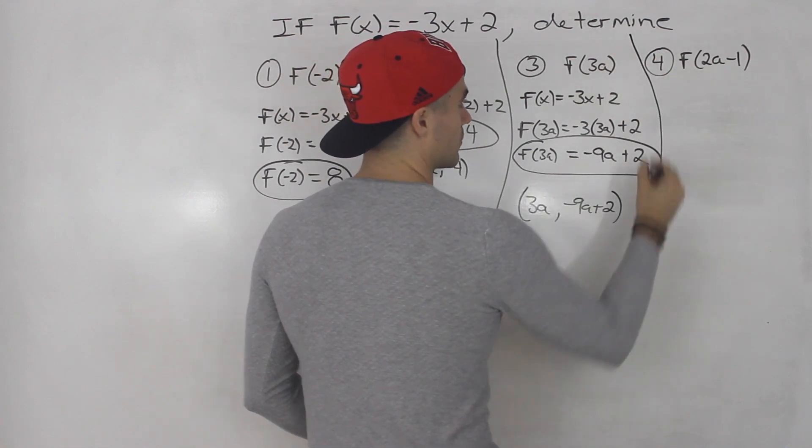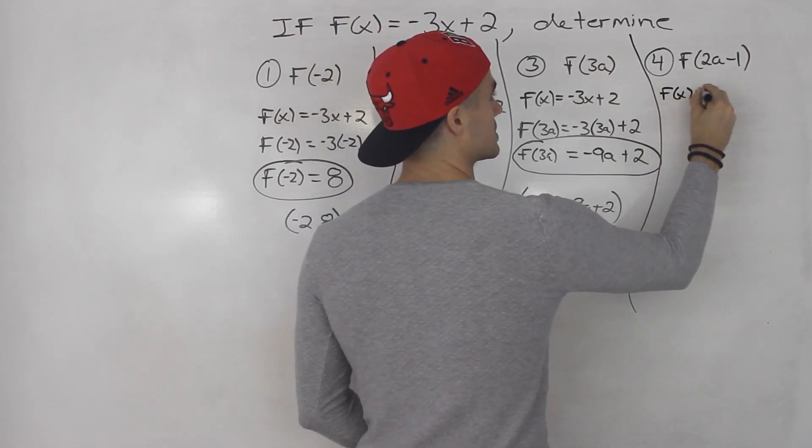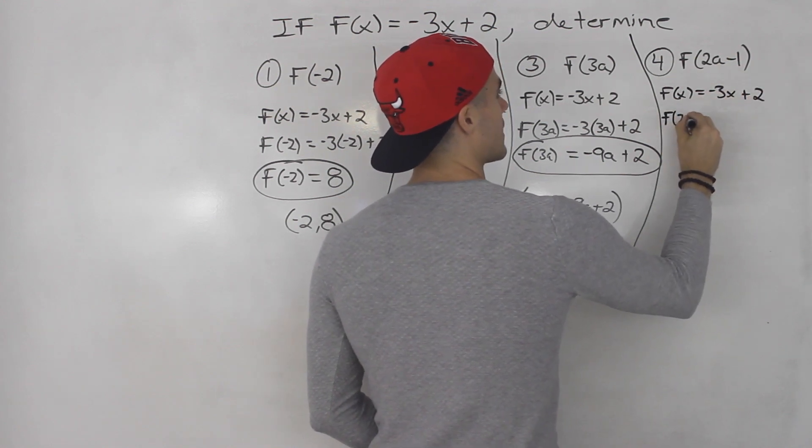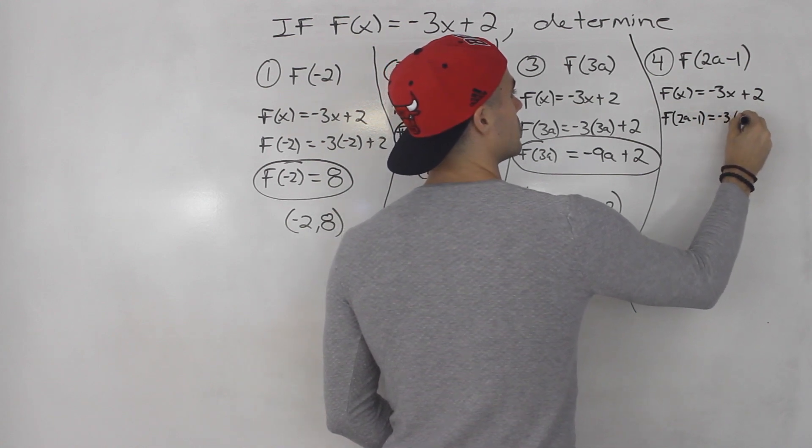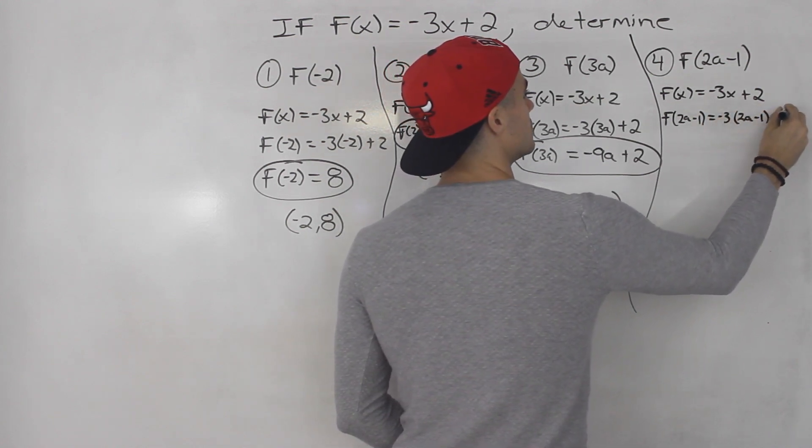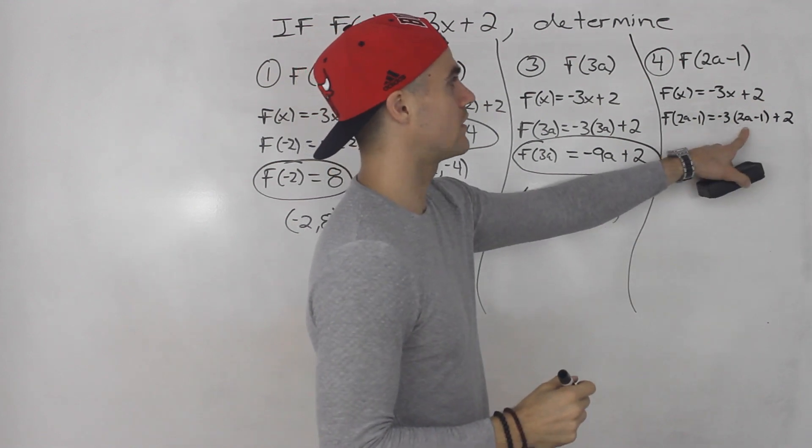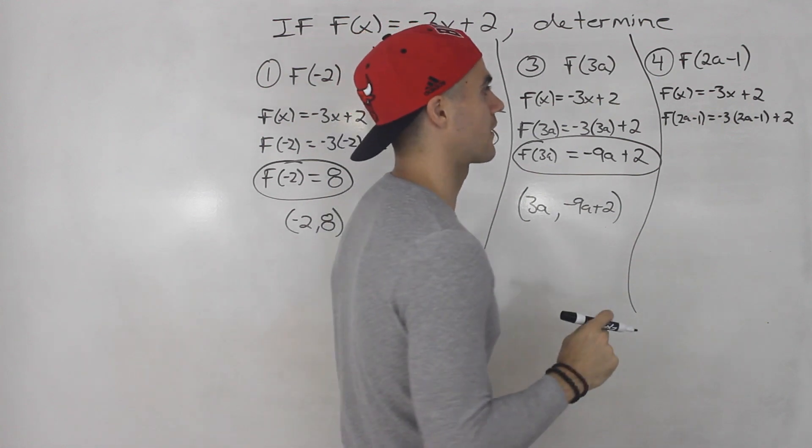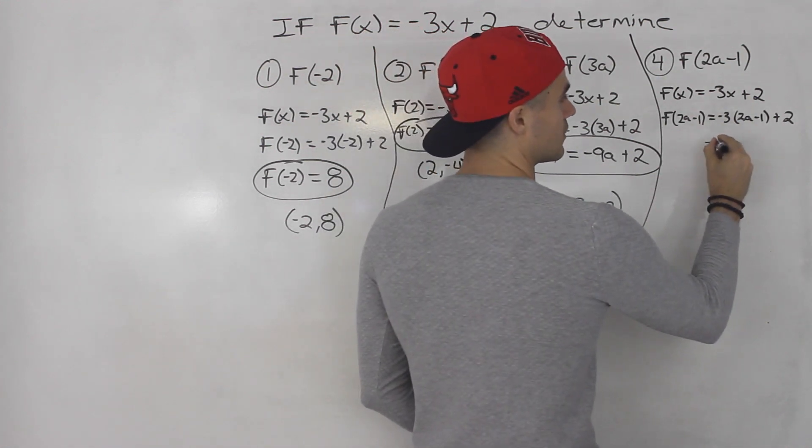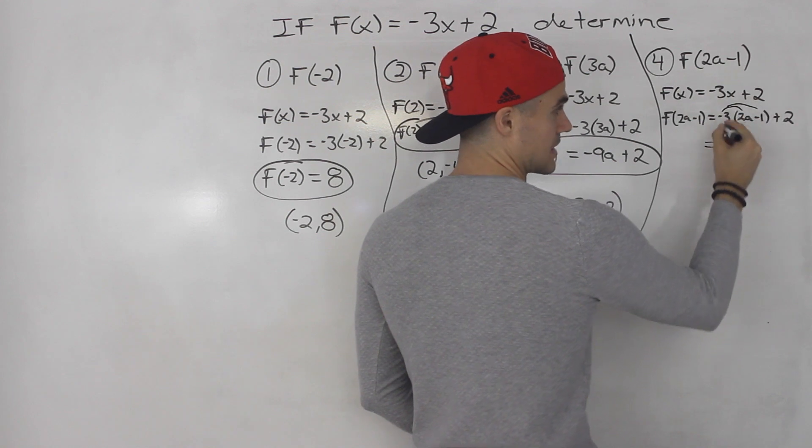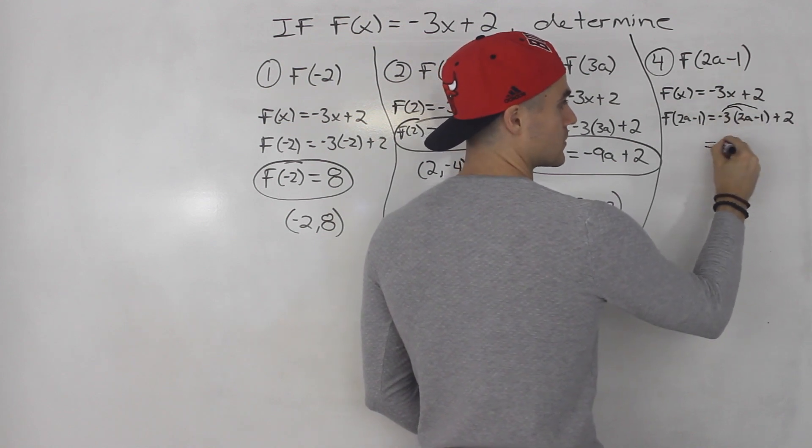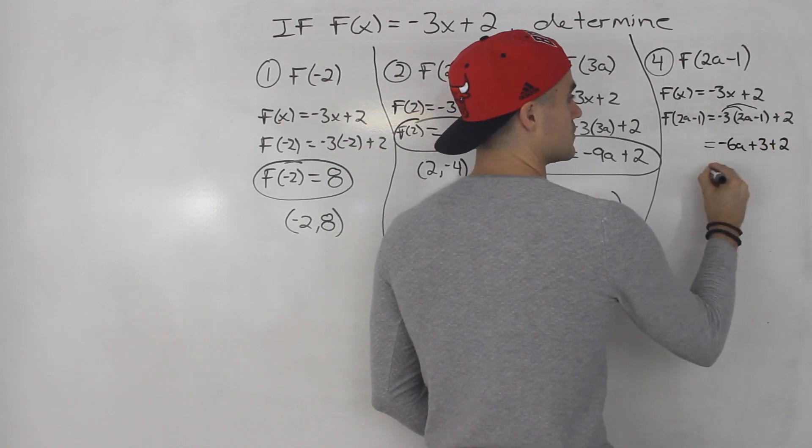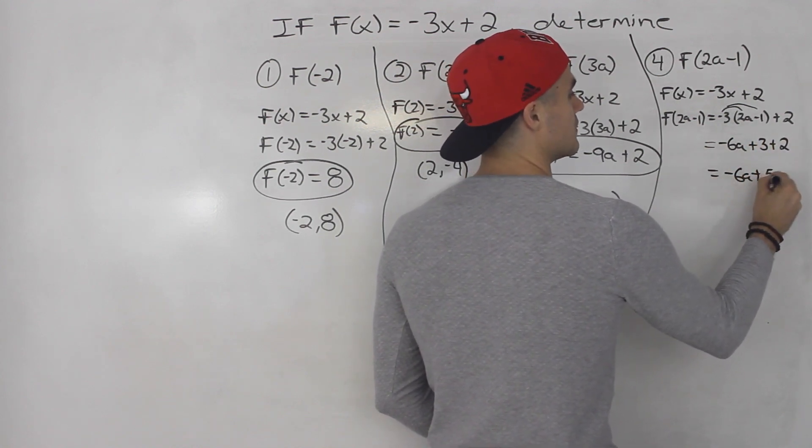Same thing for number 4. f of x equals negative 3x plus 2. So f of 2a minus 1 would be negative 3 times, in brackets, 2a minus 1, plus 2. You're plugging in 2a minus 1 for that entire x variable, so you put it in brackets. Then you simplify by distributing the negative 3 inside the bracket. Negative 3 times 2a is negative 6a. Negative 3 times negative 1 is positive 3, plus 2, which gives us negative 6a plus 5.